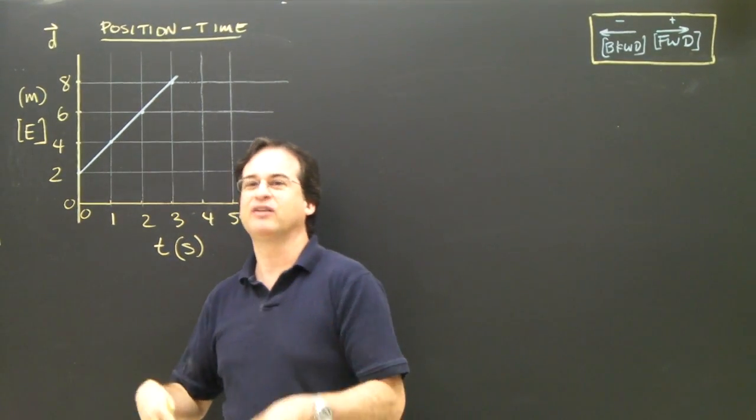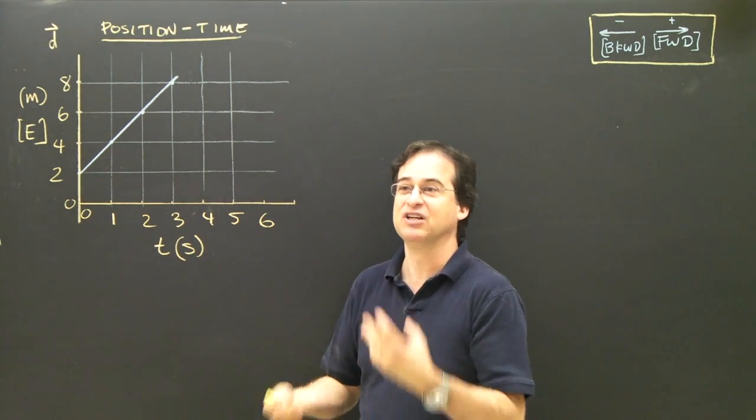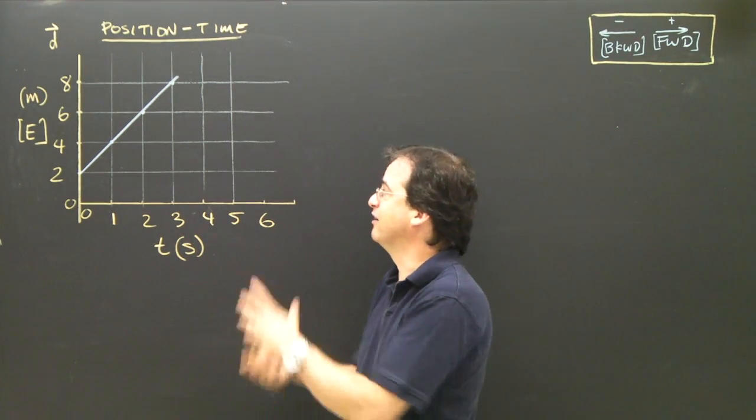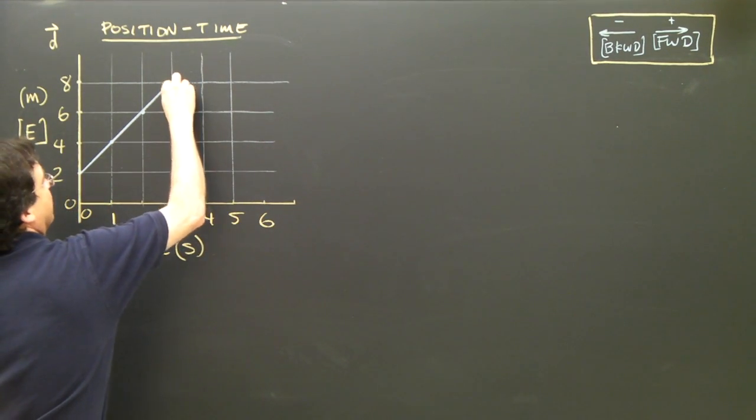Now, I'm assuming that you know how to take the slope of a graph. I'm going to do it here, but if you need more information on slopes of graphs, look up a video on that, and we'll take it from there. So, to find the slope, I need to make a triangle.